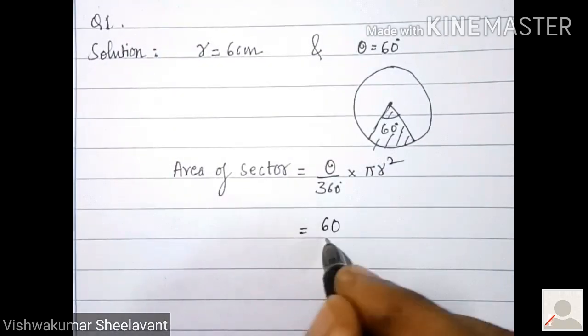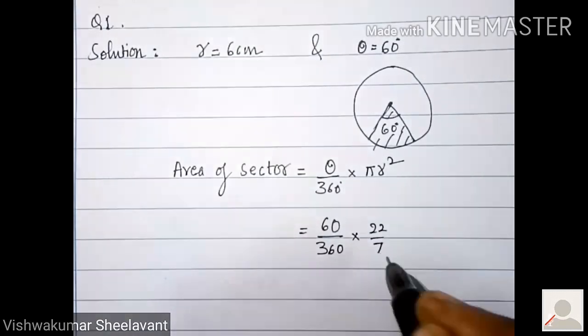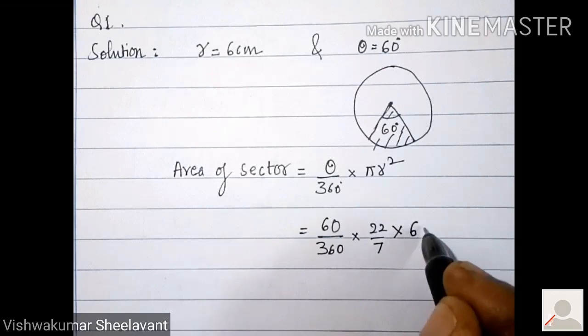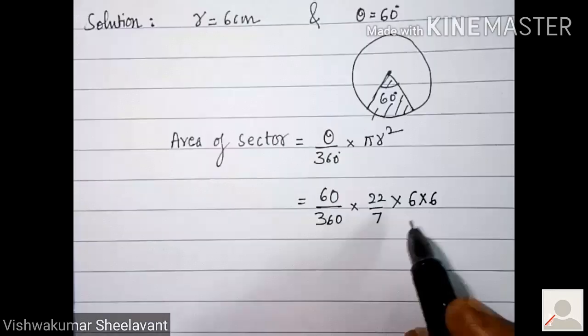So 60 by 360 into 22 by 7 into 6 into 6. 6 square means 6 into 6.